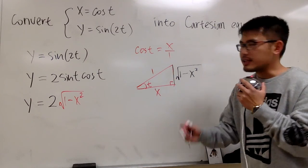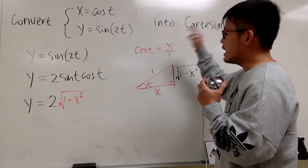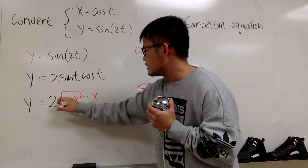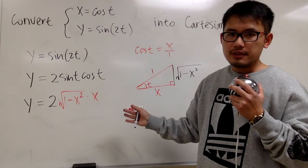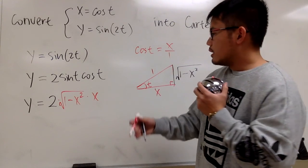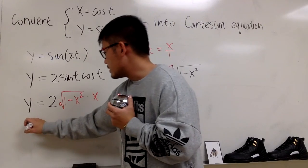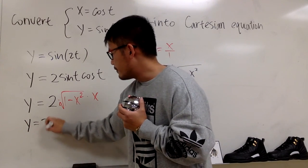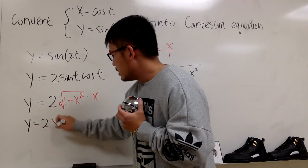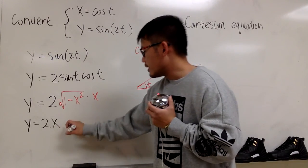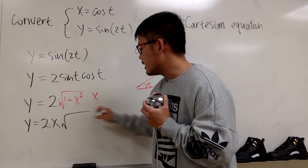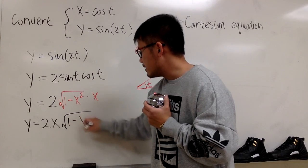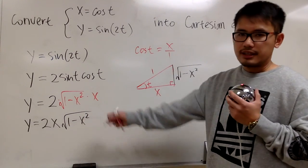And for cosine t, we already know that's just x. So we have y equals 2 times sine t times cosine t — substituting in, we get 2 times the square root of 1 minus x squared times x. Writing it neatly with the number first, then x, then the square root part: y equals 2x times the square root of 1 minus x squared.